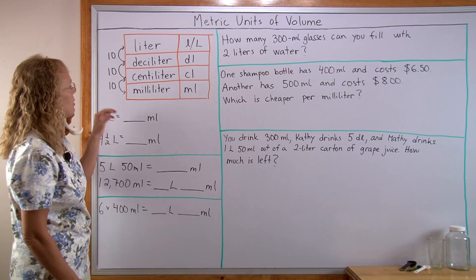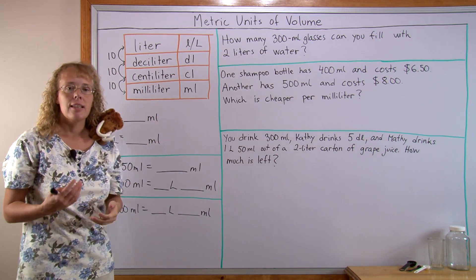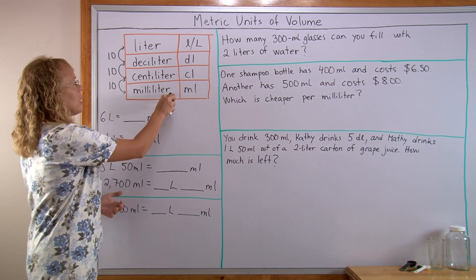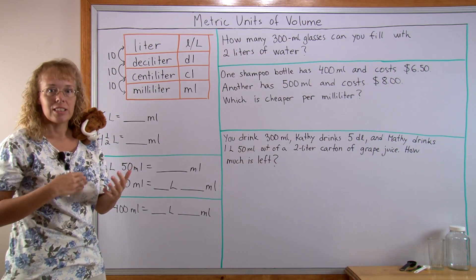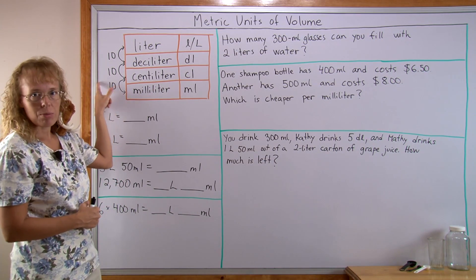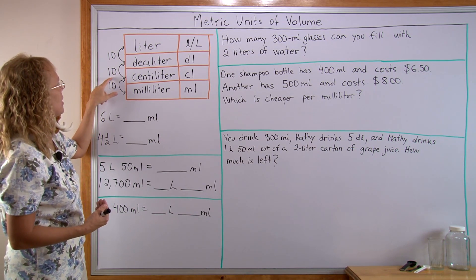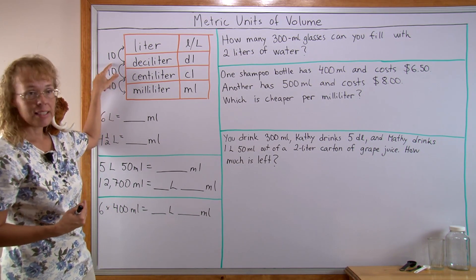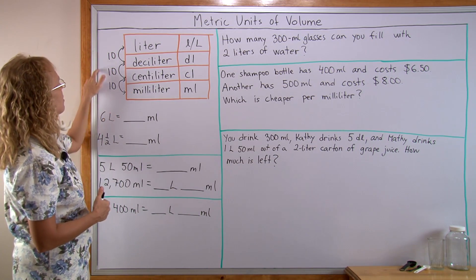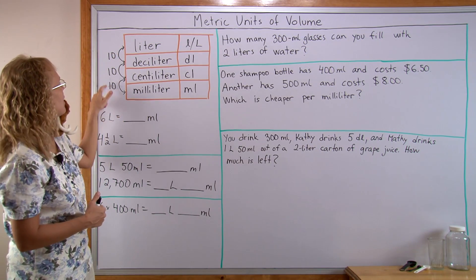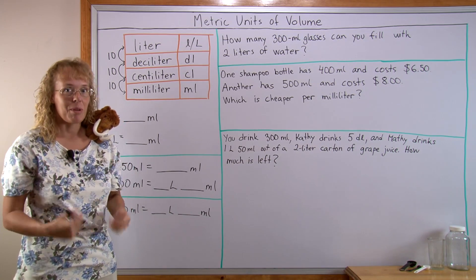The units themselves are milliliter, centiliter, deciliter, and liter. In this lesson we are going to concentrate on milliliters and liters. The conversion factor is 10 between each two neighbouring units: 10 milliliters makes a centiliter, 10 centiliters makes a deciliter, and 10 deciliters makes a liter. It follows that 1000 milliliters makes a liter — you go 10 times 10 times 10 — and that you need to remember.